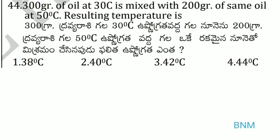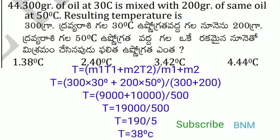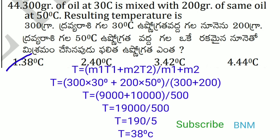First one: 300 grams of oil at 30 degrees is mixed with 200 grams of same oil at 50 degrees Celsius. The resulting temperature is T = (M1×T1 + M2×T2) / (M1 + M2) = (300×30 + 200×50) / (300 + 200) = (9000 + 10000) / 500 = 19000 / 500 = 38 degrees Celsius.